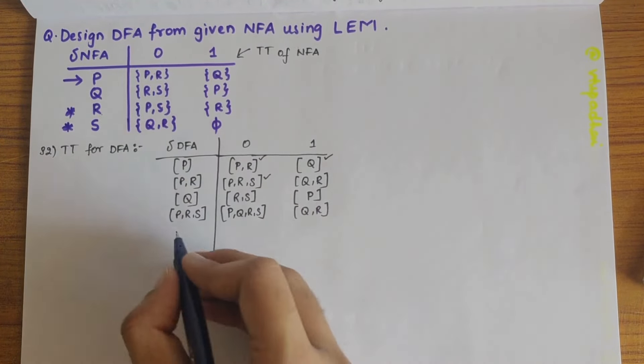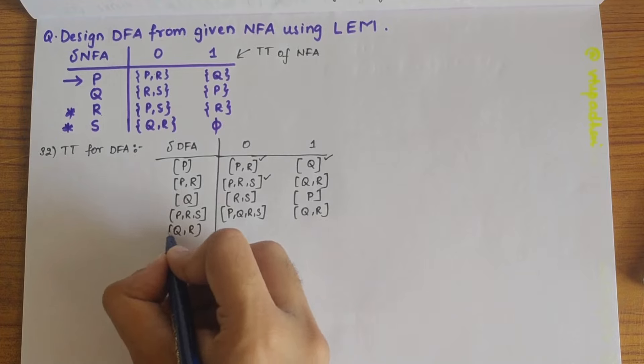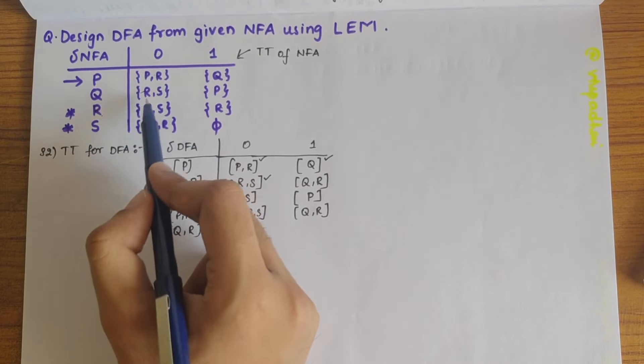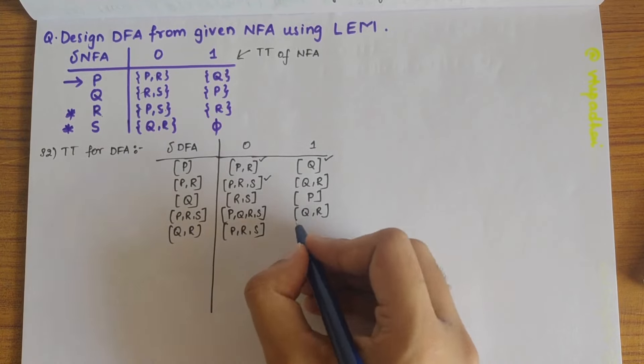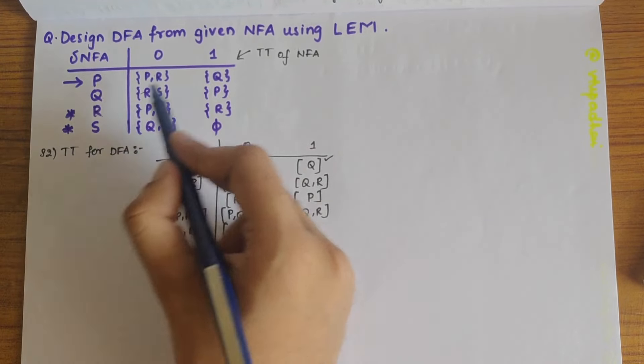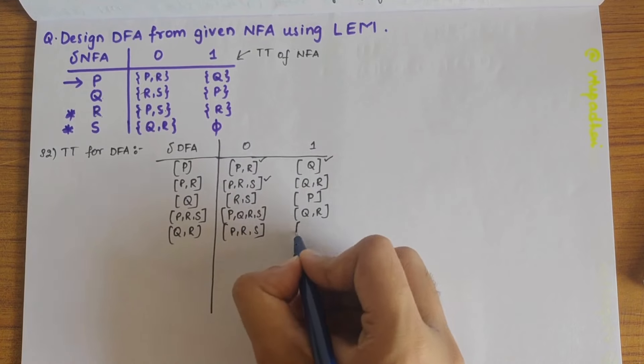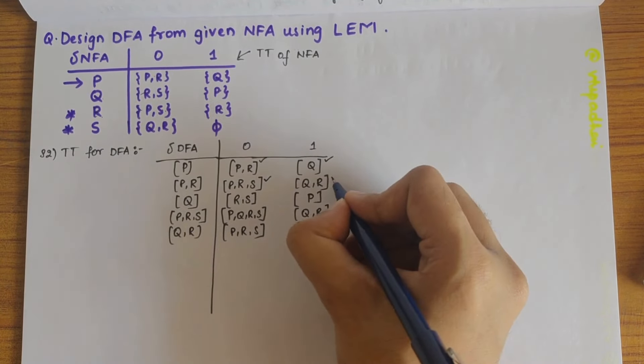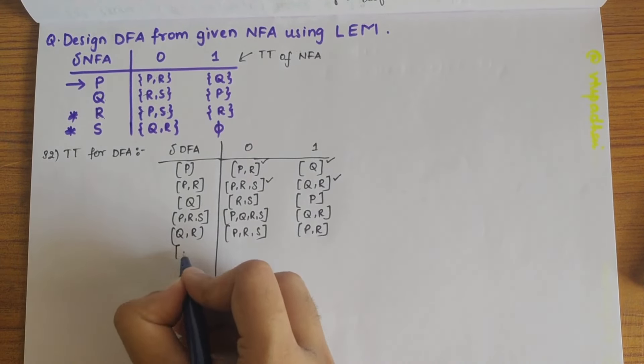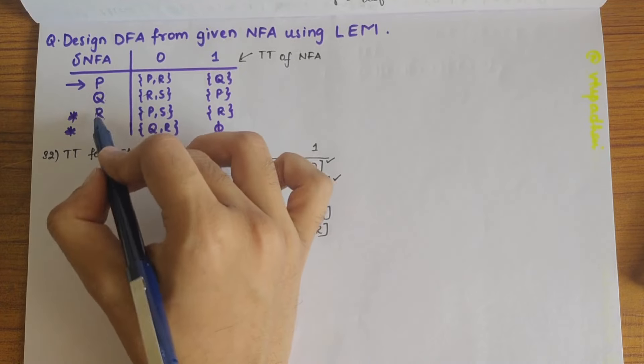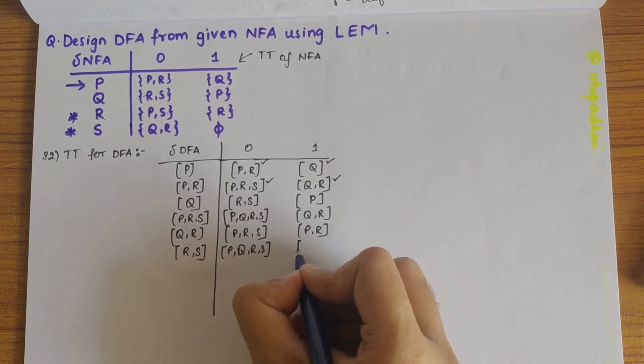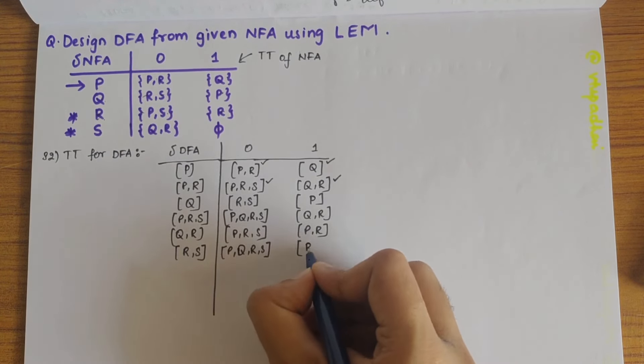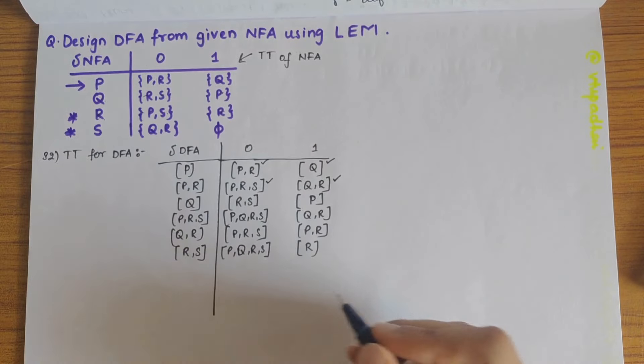PRS is defined. Now let's take QR. QR on 0 gives RS and PS, that is PRS. And QR on 1 gives PR. So we have defined QR also. Now let's take RS. So R and S on 0 gives PQRS. And RS on 1 gives R itself, that is R union phi, that is R itself.